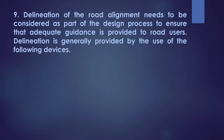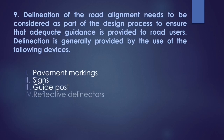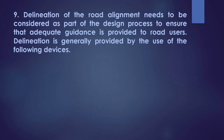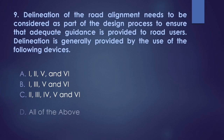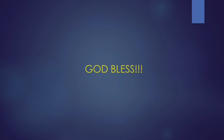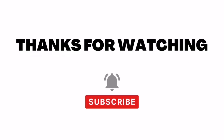Number 9: delineation of road alignment needs to be considered as part of the design process to ensure that adequate guidance is provided to road users. Delineation is generally provided by the use of the following devices: 1. pavement markings, 2. signs, 3. guideposts, 4. reflective delineators, 5. lighting, 6. curb or other physical devices. A. 1, 2, 4 and 6; B. 1, 3, 5 and 6; C. 2, 3, 4, 5 and 6; D. all of the above. Sabi ko nga sa inyo, common lagi all of the above. God bless mga engineers.